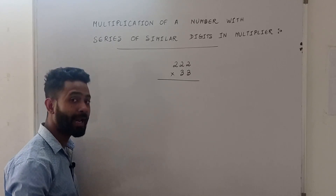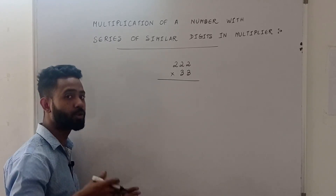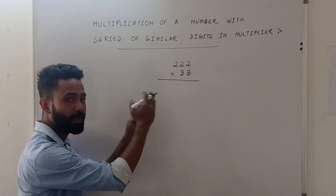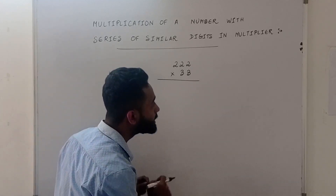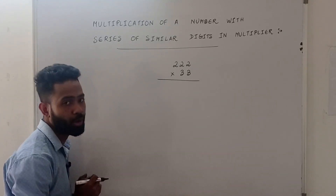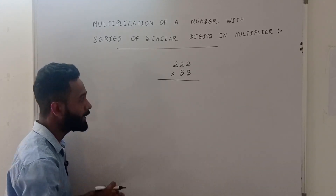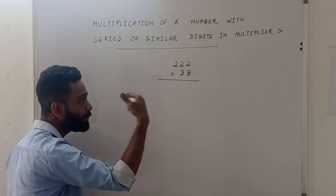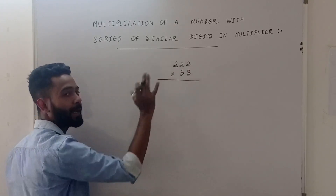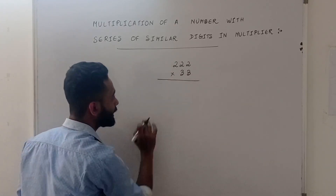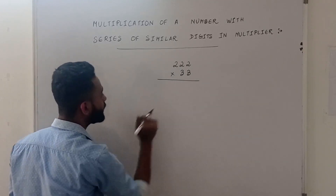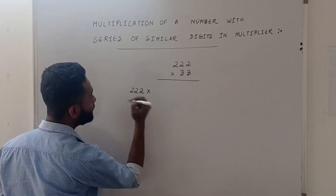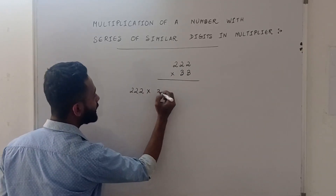Now let's look at the last video. If your audience wants to know this, they will understand it quite comfortably. In the last video, we had a series of 1-world multiplication. We had the same rule that we applied to this. Look at this number: 322 multiplied by 333.